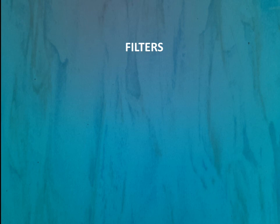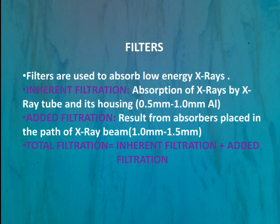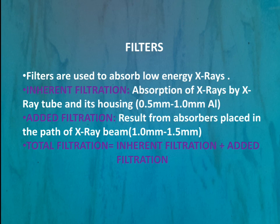To remove low energy x-rays before they reach the patient, we use filters made of aluminium or copper material. Filtration can be of two types: inherent filtration and added filtration. Inherent filtration means absorption of x-rays by the x-ray tube and its housing — x-rays absorbed within the x-ray tube and housing itself. For inherent filtration, 0.5 mm to 1 mm thick aluminium material is used.